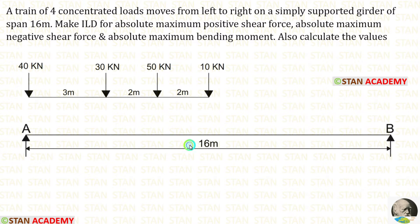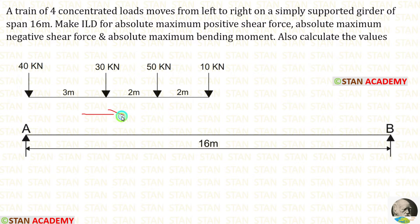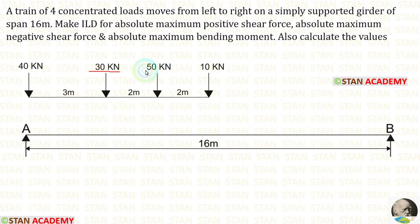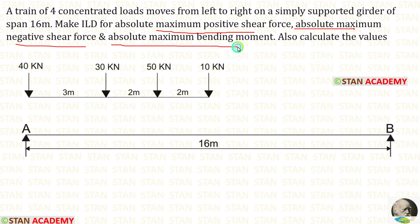In the question the length of the beam is given as 16 meter. Four moving loads are given, moving from left to right. The 50 kN and 10 kN point loads are spaced at 2 meter. The 30 kN and 50 kN point loads are spaced at 2 meter. The 40 kN and 30 kN point loads are spaced at 3 meter. We have to calculate the absolute maximum positive shear force, absolute maximum negative shear force and absolute maximum bending moment.